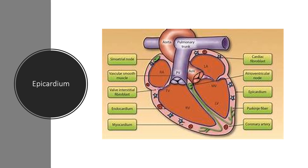The pericardium is composed of three membrane layers that encircle the exterior of the heart: the outer fibrous pericardium, the middle parietal pericardium, and the inner epicardium, also referred to as the visceral pericardium. Together, these fused layers form a space around the heart called the pericardial cavity.